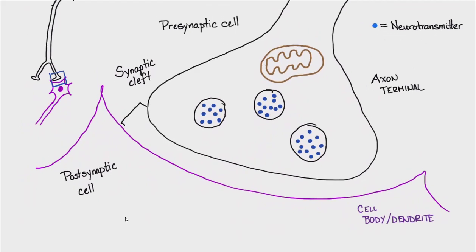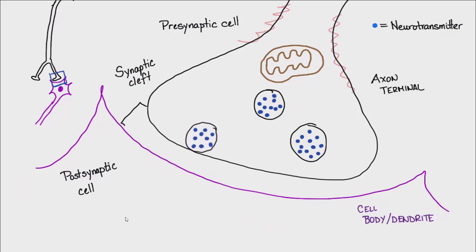Here's the basic overview of what's going to happen. Action potentials come down to the axon terminal, and that somehow results in the movement of these vesicles to the edge of the plasma membrane. This is going to be exocytosis: the membranes fuse, and the neurotransmitter is secreted into the synaptic cleft. That neurotransmitter is a paracrine whose target is the postsynaptic cell, meaning the postsynaptic cell needs to have some sort of receptor for that neurotransmitter embedded in its membrane.